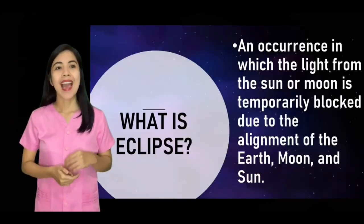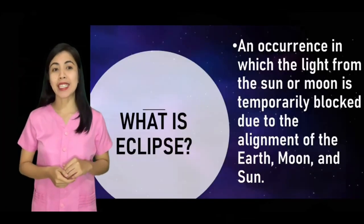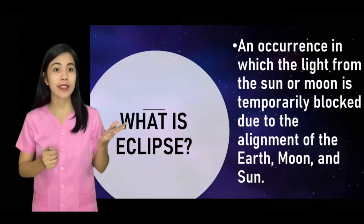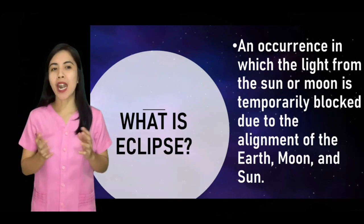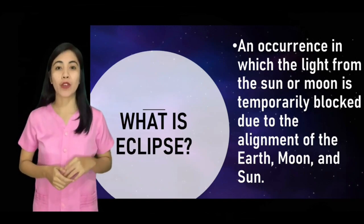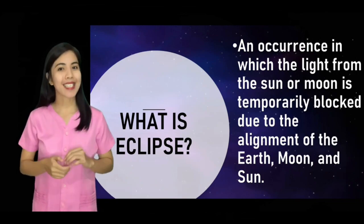So, what is eclipse? Eclipse is an occurrence in which light from the sun and the moon is temporarily blocked due to the alignment of the earth, moon, and sun. When the earth moves around the sun and the moon also moves around the earth, a shadow will be formed when light from the sun is partially or completely blocked by a heavenly body. Thus, when the shadow of one celestial object falls on another, an eclipse may occur.